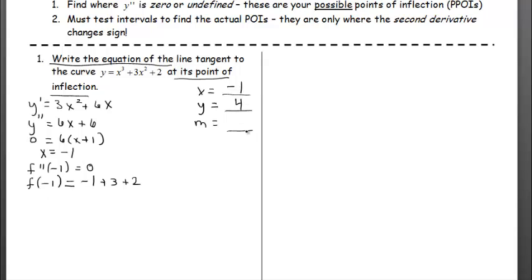We're missing slope to write the equation of the line, so let's go back to the first derivative. I'm just going to use f prime and evaluate it at negative one. Plugging in negative one gives three minus six, so the result is negative three.